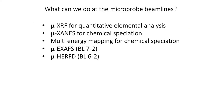Now let's talk about what we can actually measure at the microprobe beamlines. We can do micro x-ray fluorescence mapping for quantitative or semi-quantitative elemental analysis, micro x-ray absorption near edge structure spectroscopy (micro-XANES) on select spots for chemical speciation, or multi-energy mapping to obtain chemical speciation across a two-dimensional area. At beamline 7-2 we can also do micro extended x-ray absorption fine structure (EXAFS) spectroscopy, and at beamline 6-2 we offer micro high energy resolution fluorescence detection (HERFD) XANES spectroscopy, which is particularly useful for heavier elements such as mercury, lead, uranium, or plutonium.